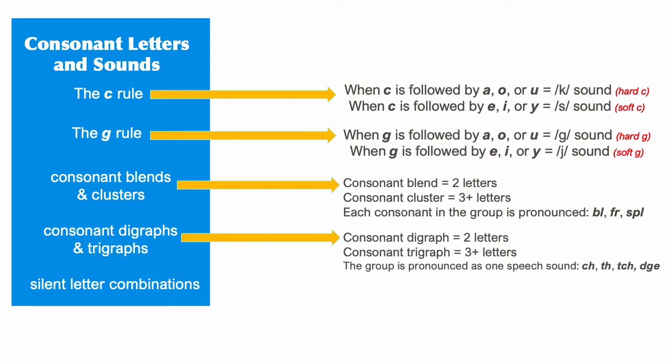In a consonant digraph or trigraph, you don't pronounce each consonant distinctly. Instead, these letters are pronounced as one speech sound, such as CH, TH, TCH which also sounds like CH, or DGE which makes a J sound.